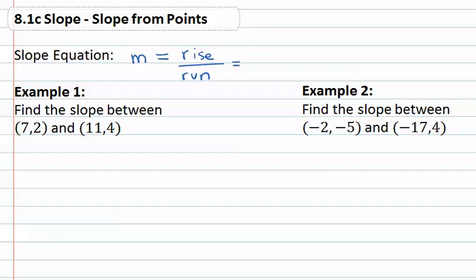And if we think about that, the rise moving up and down is the y values. That's how much we change in the y direction. I'm going to say change in y over the run horizontally. The horizontal axis is the x axis. That tells us how much we change in the x direction.